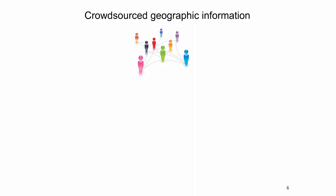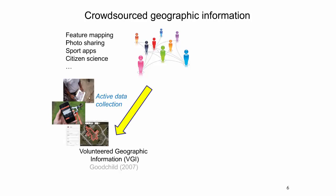The establishment of Web 2.0 has led to a plethora of web applications that facilitate the idea of crowdsourced geographic information. One group of applications supports active, deliberate data collection. This results in Volunteer Geographic Information, or VGI for short. For example, platforms that support active data collection are feature mapping platforms such as OSM, photo sharing applications such as Flickr, GPS-based sports apps such as Strava, and geographic citizen science projects.